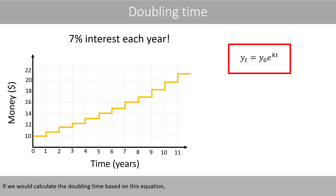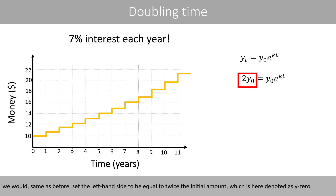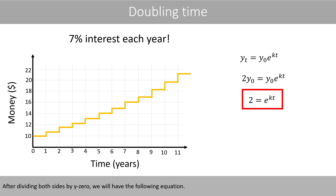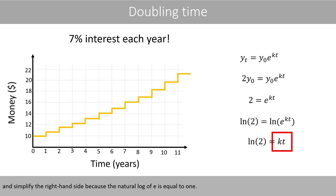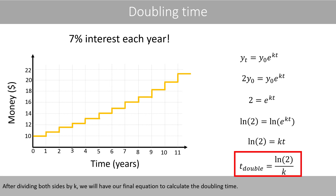To calculate the doubling time based on the continuous growth equation, we set the left-hand side equal to twice the initial amount Y0. After dividing both sides by Y0, we take the natural log of both sides and simplify the right-hand side, because the natural log of E is equal to one. After dividing both sides by K, we have our final equation to calculate the doubling time.